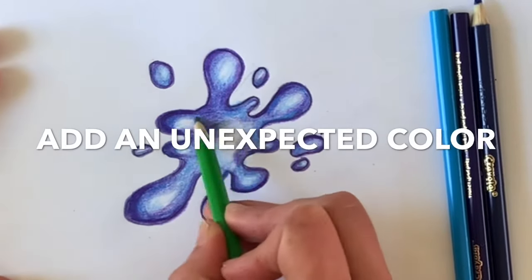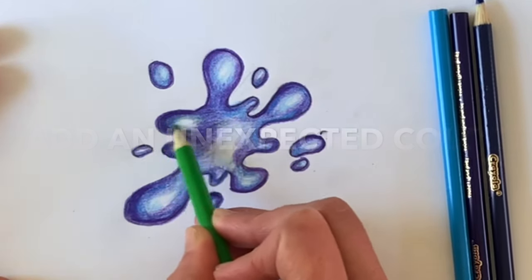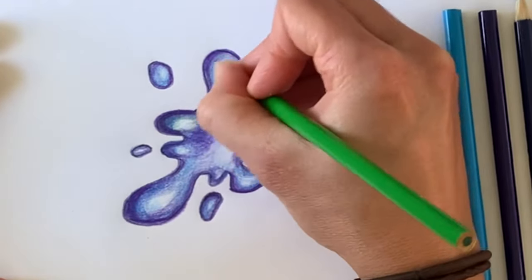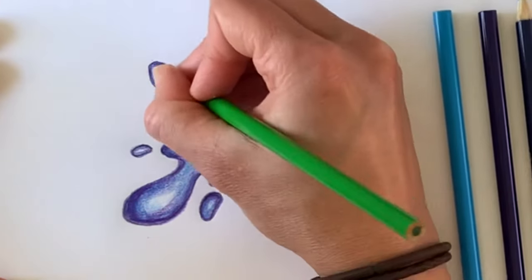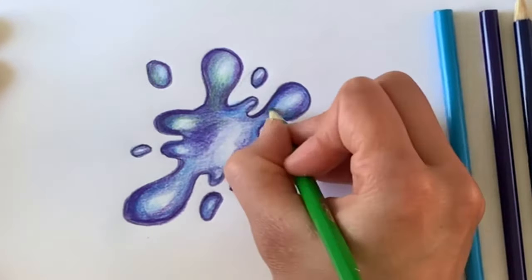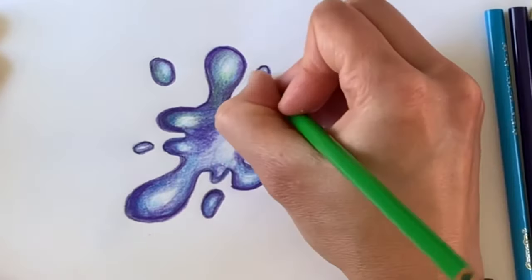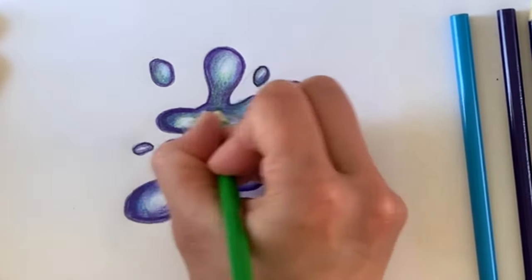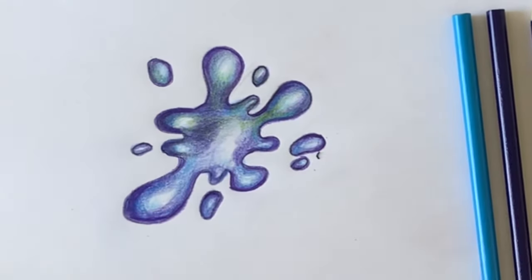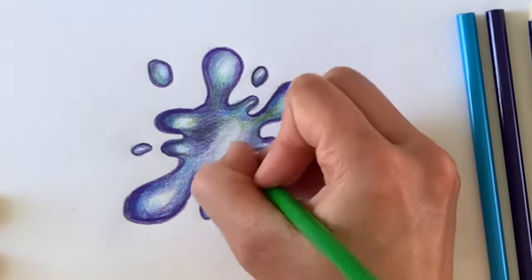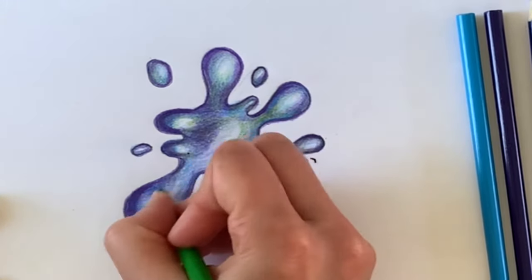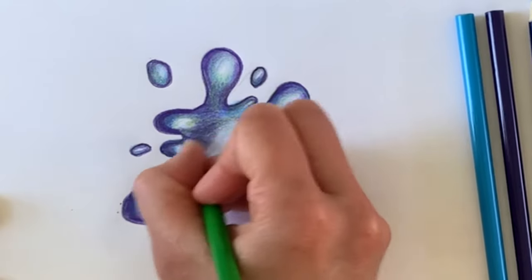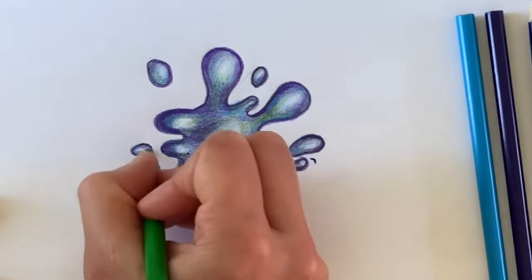Now I'm going to add a little bit of an unexpected color. So green is a cool color, so it does fit in the color family of my paint splatter. However, it's not blue or violet, so it gives a little bit more depth and dimension and interest to my color scheme. So already my vibrancy and the interest in this paint splatter is upped by mixing in colors that you wouldn't expect. Notice I'm using a light value and not pressing down too hard. It's not turning into a green paint splatter—the dominant color is still very much dominant.